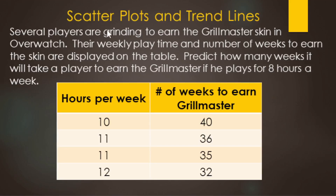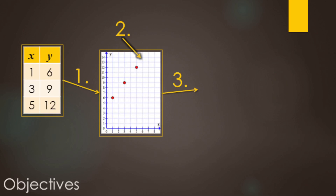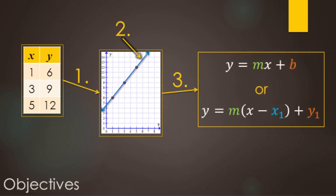In this video, we are going to be going over scatter plots and trend lines. These come up in science class when you're doing an experiment or taking a survey. For this example, we have video game players trying to earn the grill master skin. We're going to start with data, make a scatter plot, then make a trend line or line of best fit, and write an equation in either slope intercept form or point slope form.